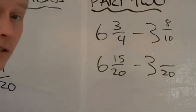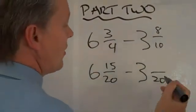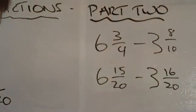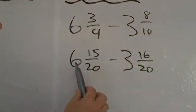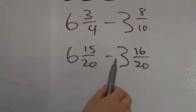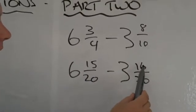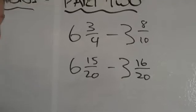Ten into twenty goes twice. Two times eight is sixteen. Now we've got a bit of a problem, because we can't take away the whole ones and then take away the fractions, because you've got fifteen twentieths take away sixteen twentieths.